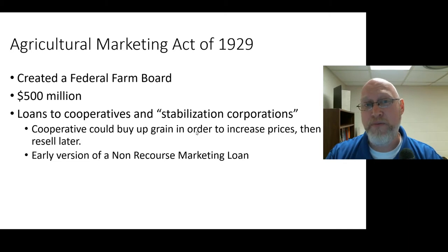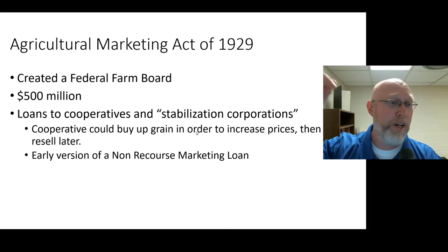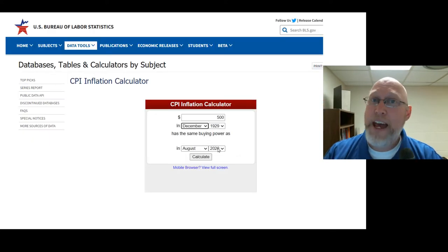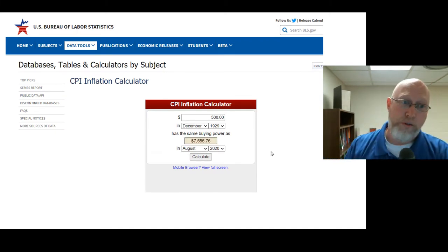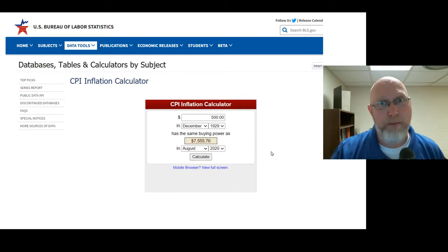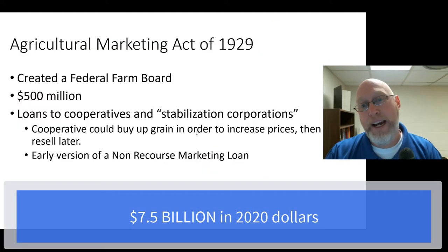The Act set aside five hundred million dollars. I'll look up that number and put it on the screen to show you what that would be worth in today's dollars. That five hundred million dollars was basically designed to be loans — the government wasn't giving anyone money, it was lending money.